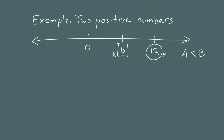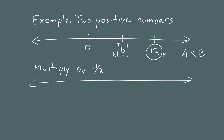Now let's see what happens if we multiply them by negative numbers. First, we'll multiply the numbers by negative one-half. I'll put 0 over to the right since we'll need room on the left. If you multiply 6 by negative one-half, you get negative 3 — this is where A ends up. If you multiply 12 by negative one-half, you get negative 6 — this is B. Both numbers flipped sides, going from the positive half to the negative half of the real number line.